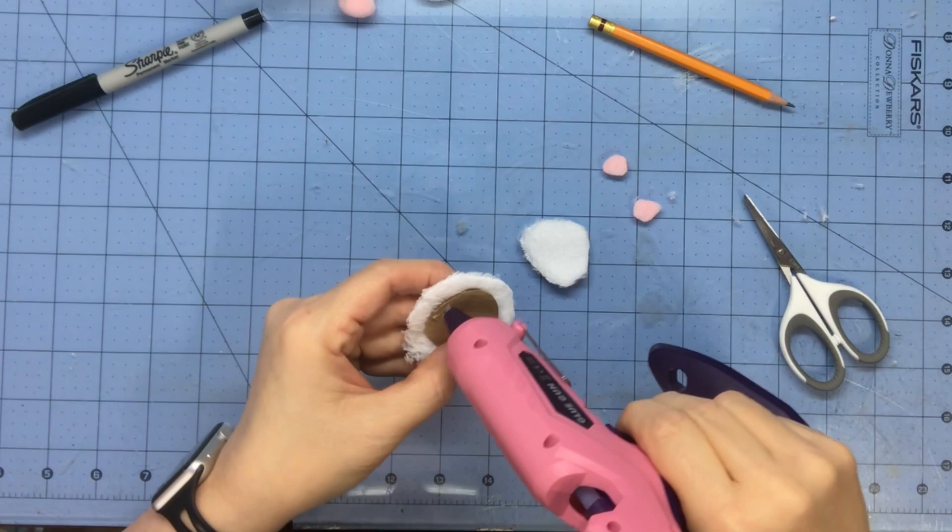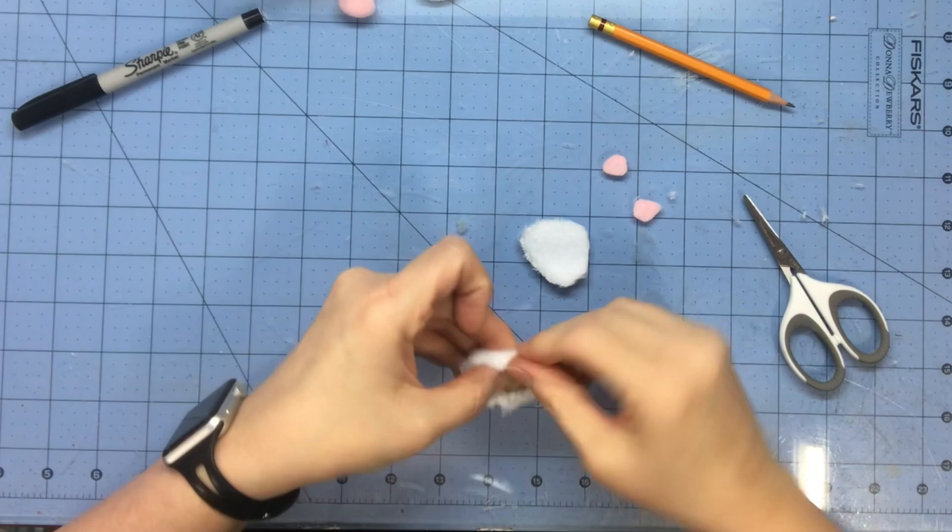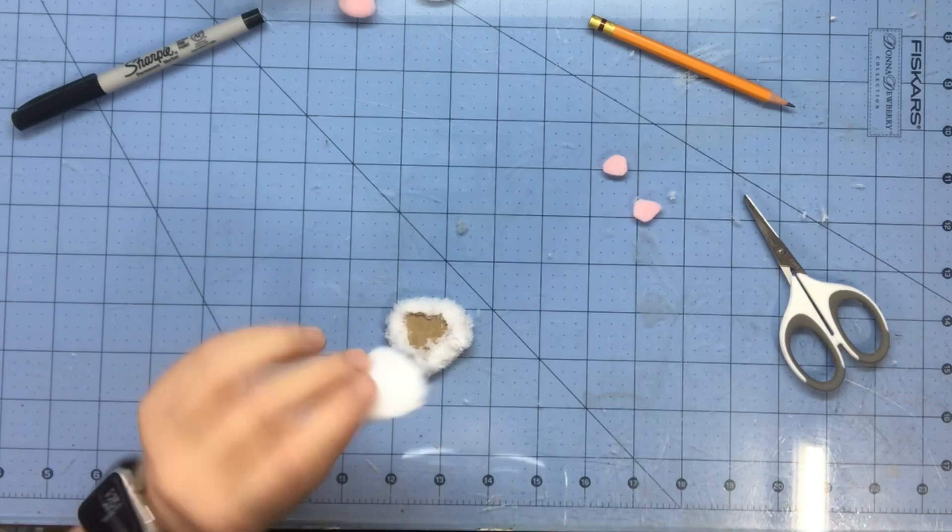This is going to put our fur on our butt, so to speak. Then I'm going to take this part that we cut and put a dot in the middle, then go around the edges. You see what I'm doing here?